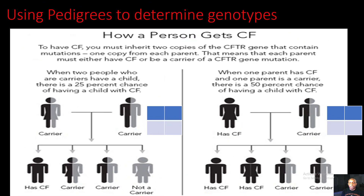Hey everyone, we're back. And I know that your check for understanding went great. So let's go ahead and take a look at how we use pedigrees in order to determine genotypes — and we'll take a look at the cystic fibrosis example again. In order to have cystic fibrosis, you must inherit two copies of the cystic fibrosis gene that contain mutations — one copy from your mom and one copy from your dad.